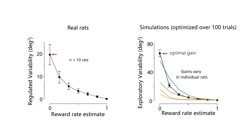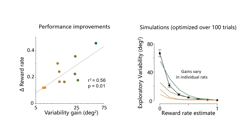Now, if trial-to-trial variability is indeed an important part of improving performance, rats that regulate variability more should learn faster and accumulate more reward. This is indeed what we saw. There was a strong correlation between the gain of the variability control function and the rats' performance, and also the degree to which they learned in our task, suggesting that variability regulation is indeed an essential component of performance optimization.